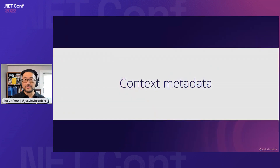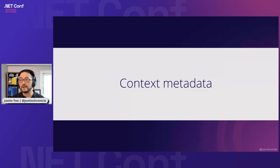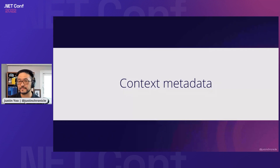What the cloud event spec does is define context metadata. You already have event data, and this event data should be wrapped with metadata as well. That context metadata contains event source — where the event occurred — event type, which is the type of the event, timestamp — when the event occurred — and extension data specific to the event.